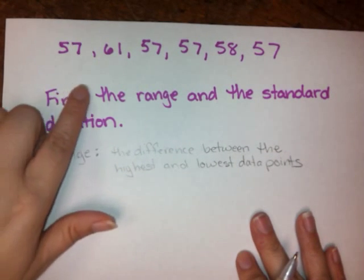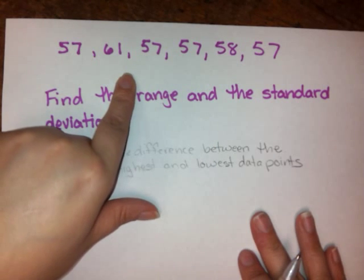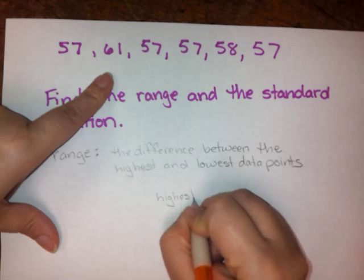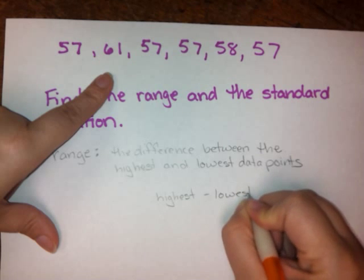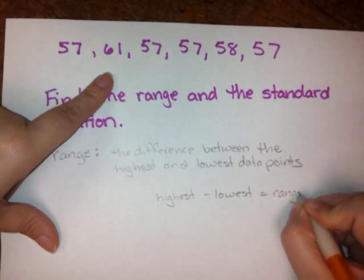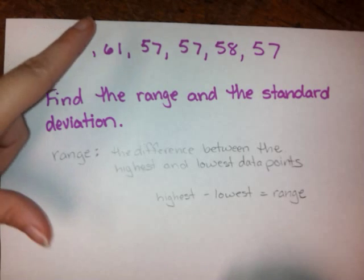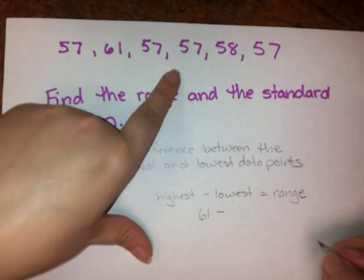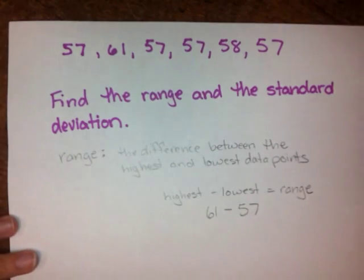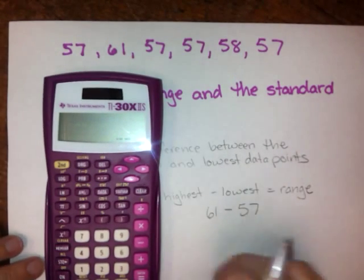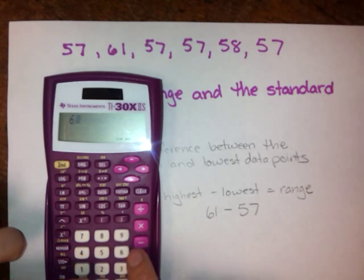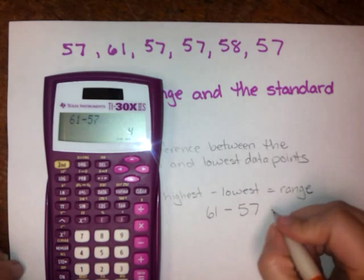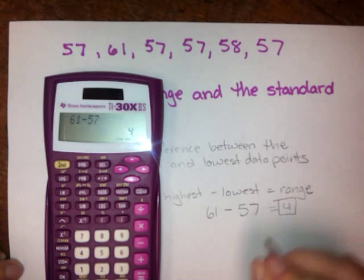So in this case, I need to go up here, look and see what my lowest number is and what my highest number is. And then I need to set up highest minus lowest equals range. So it looks like here my highest number is 61. So I'm going to do 61 minus my lowest number is 57. Plug that into my calculator because it's very late at night and I don't trust myself to do the subtraction in my head. 61 minus 57, it better be 4. It's 4. So our range in this case is 4.